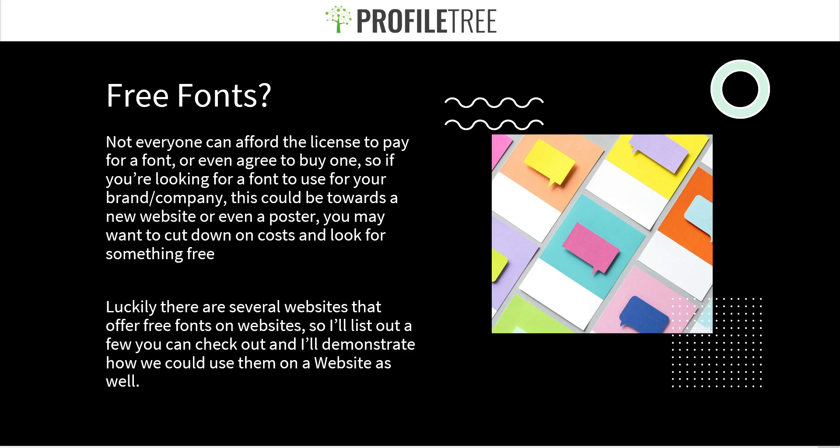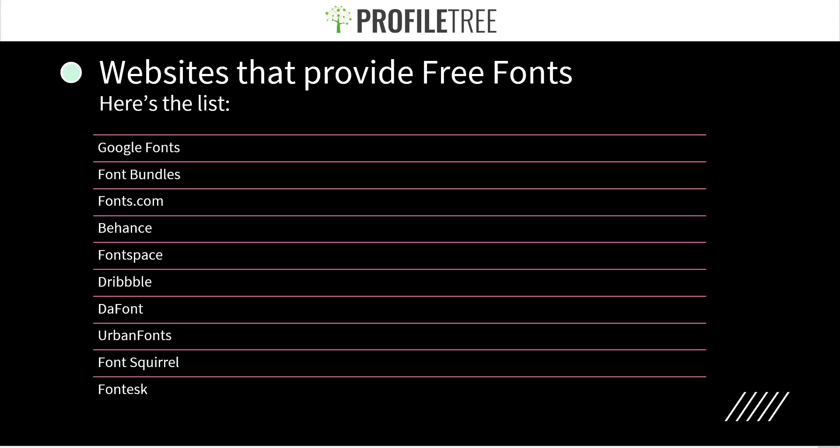Here's a list of websites that provide free fonts: Google Fonts, Font Bundles, Fonts.com, Behance, Font Space, Dribbble, The Font, Urban Fonts, Font Squirrel, and Font Task. The ones I use most commonly are Font Space and Google Fonts. We're going to explore the different ones provided and see what you can get for your website.